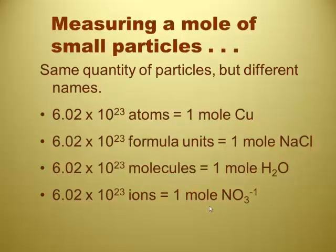Measuring a mole of small particles. Same quantity of particles, different names. 6.02 times 10 to the 23rd atoms would be a mole of copper, which is an element. A mole of sodium chloride would be measured in formula units - ionic compound. So, we've got a metal and a non-metal. Two non-metals, so molecules. And the charge, so ions.